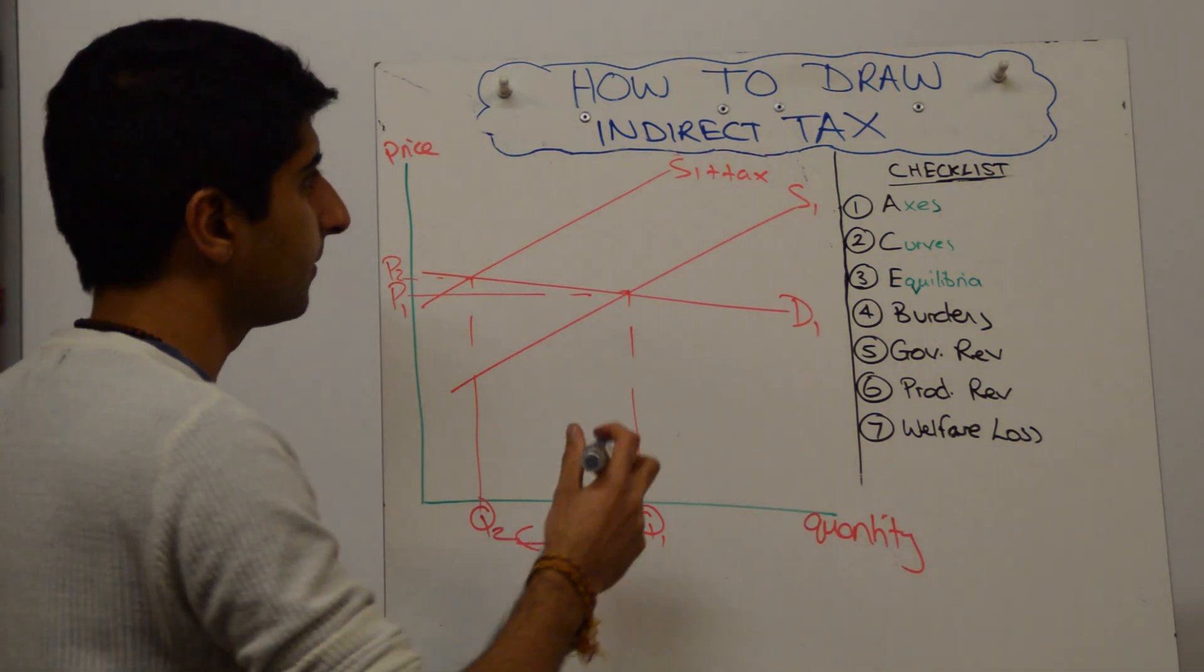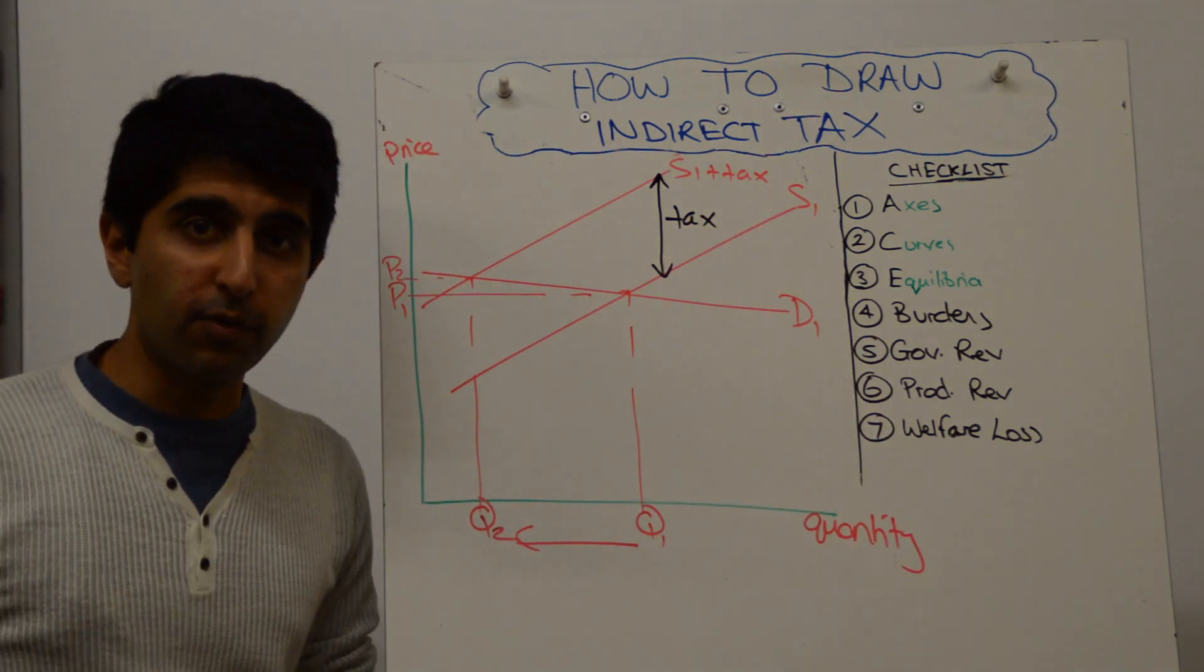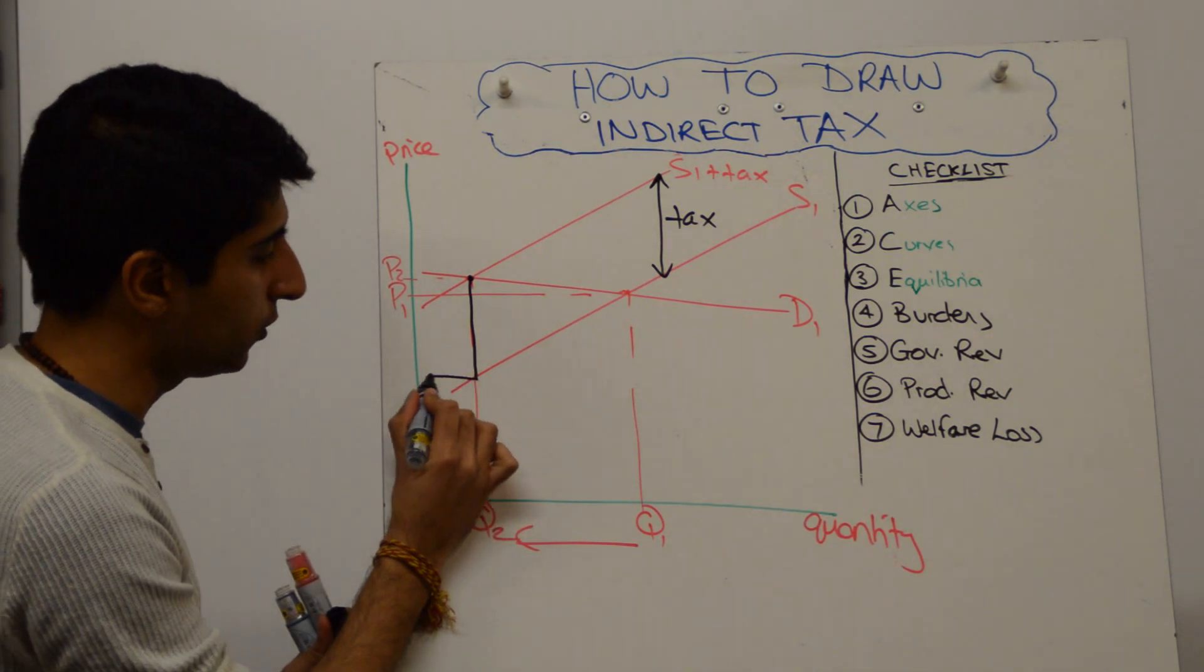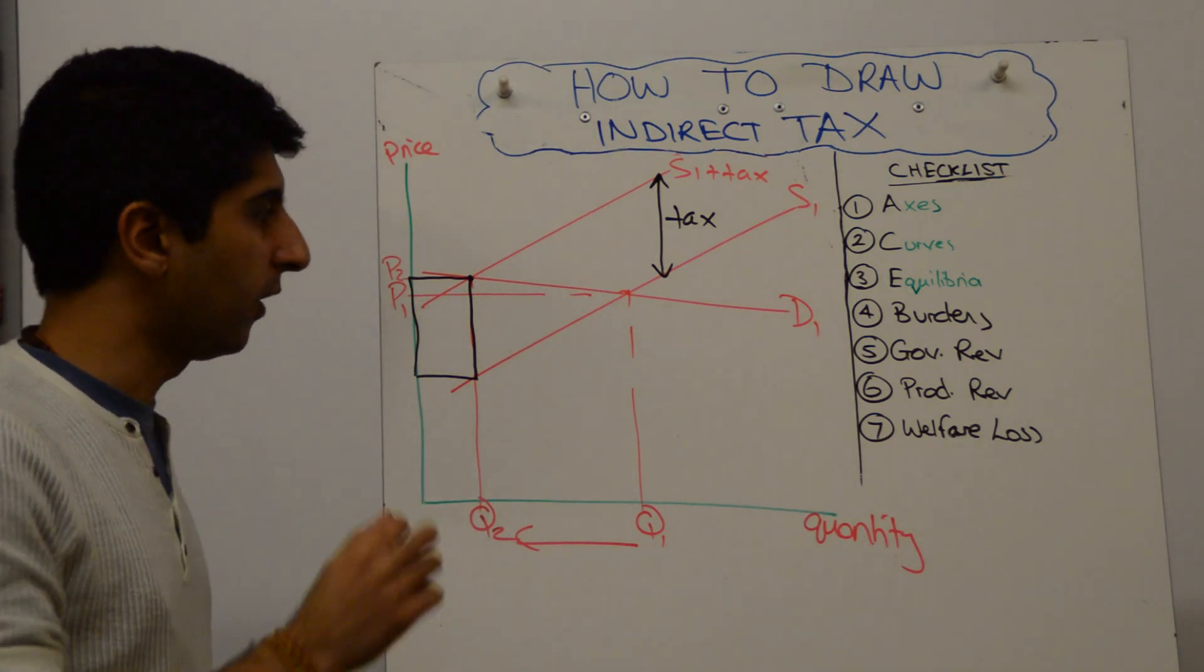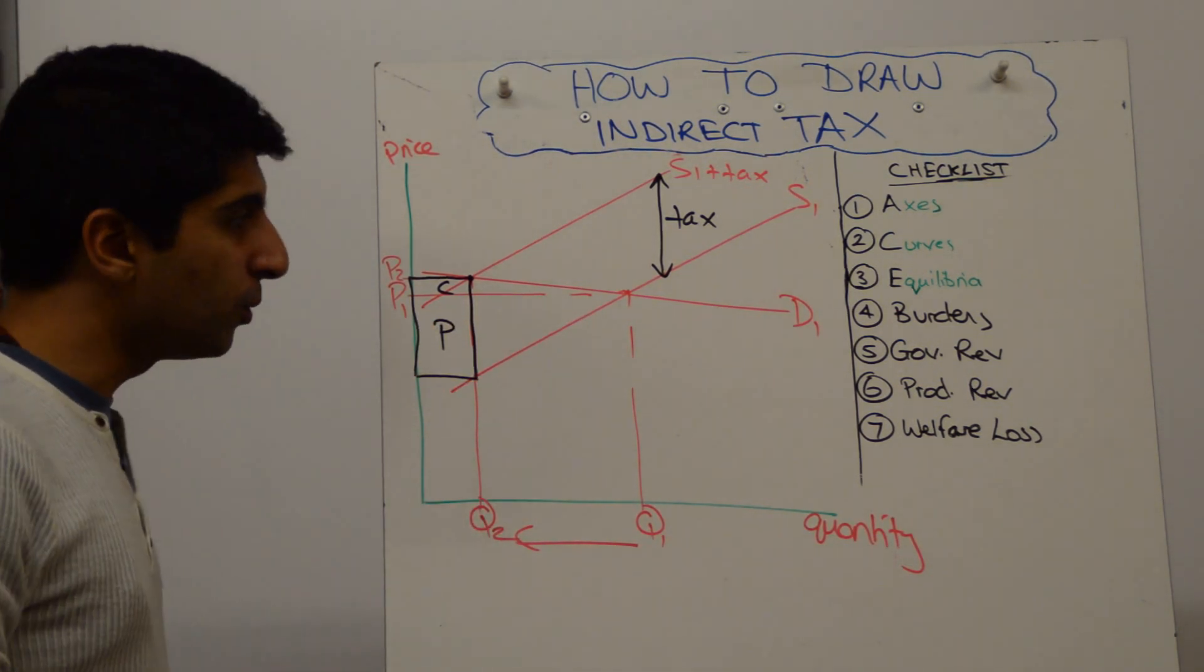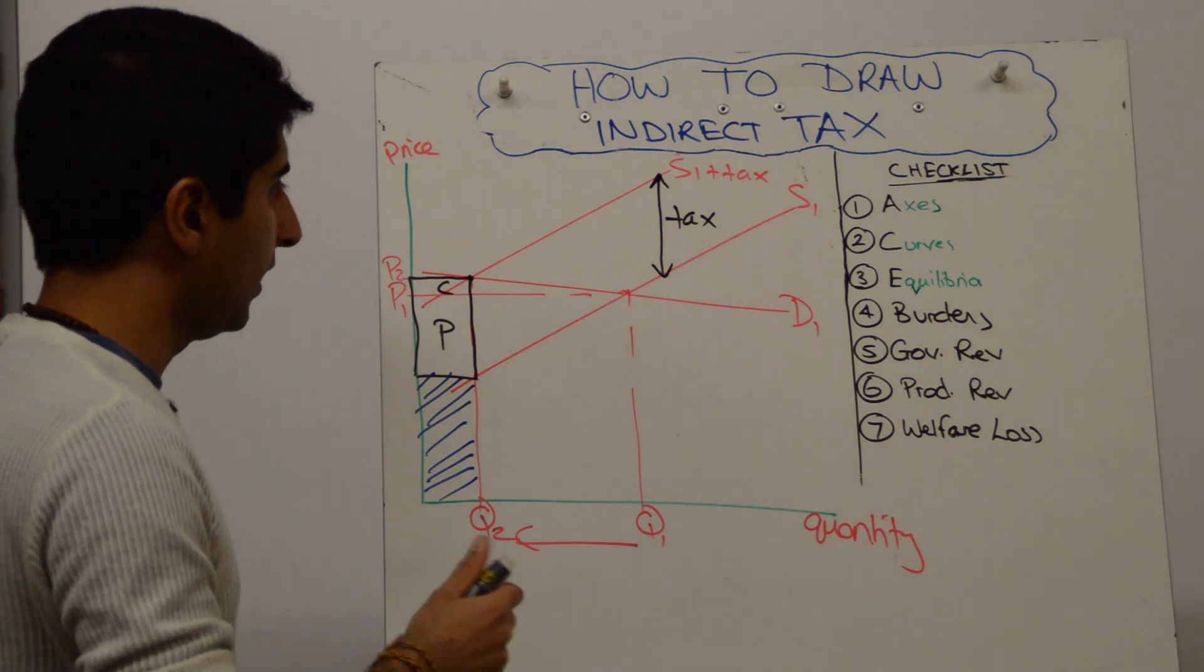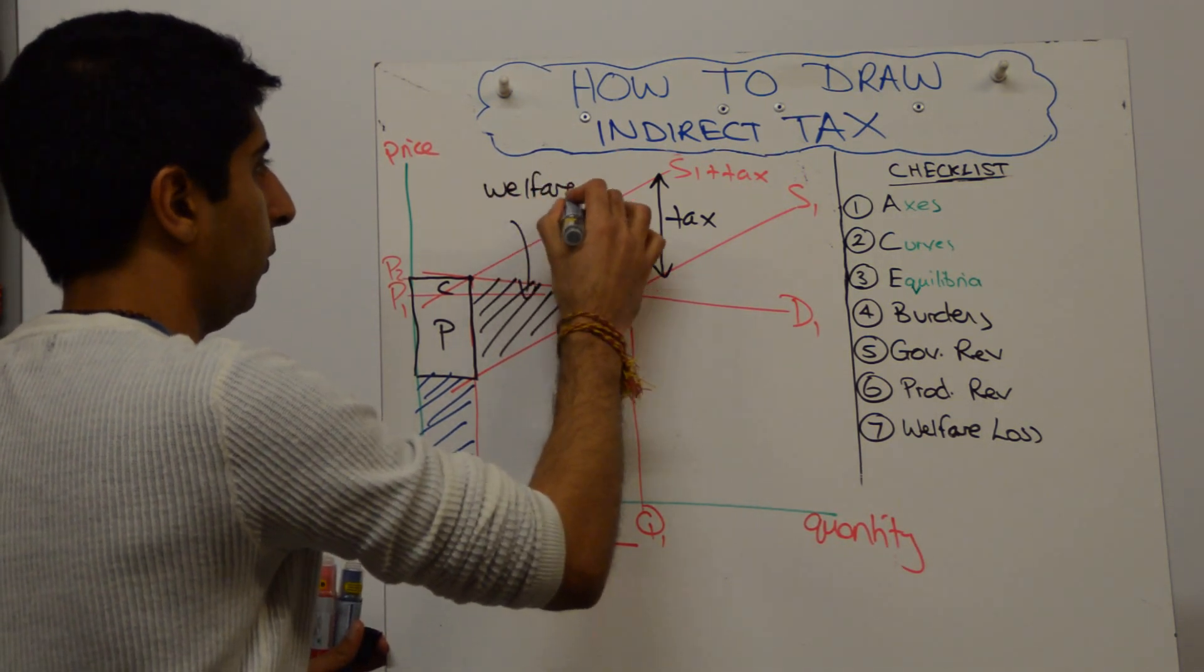Let's again stick on the value of the tax. Vertical distance between the supply curves. That's the tax. Same technique. Now let's show the government revenue. Go to the new equilibrium. The value of the tax, the vertical distance between the two supply curves, the black line, times that by the number of units sold and produced, which is there. And that gives us this black box. That's where the government revenue is. Much, much smaller than it was before. The consumer burden is the difference in price. The producer burden is the rest. The new producer revenue is just going to be this blue box. All that's left for the producer once the tax has been paid.